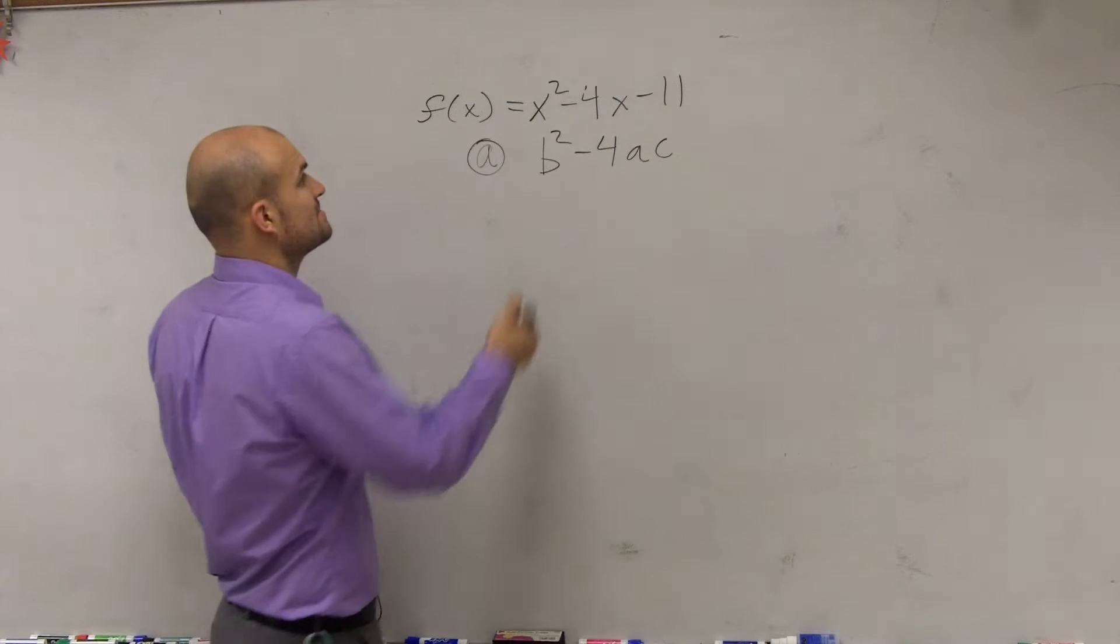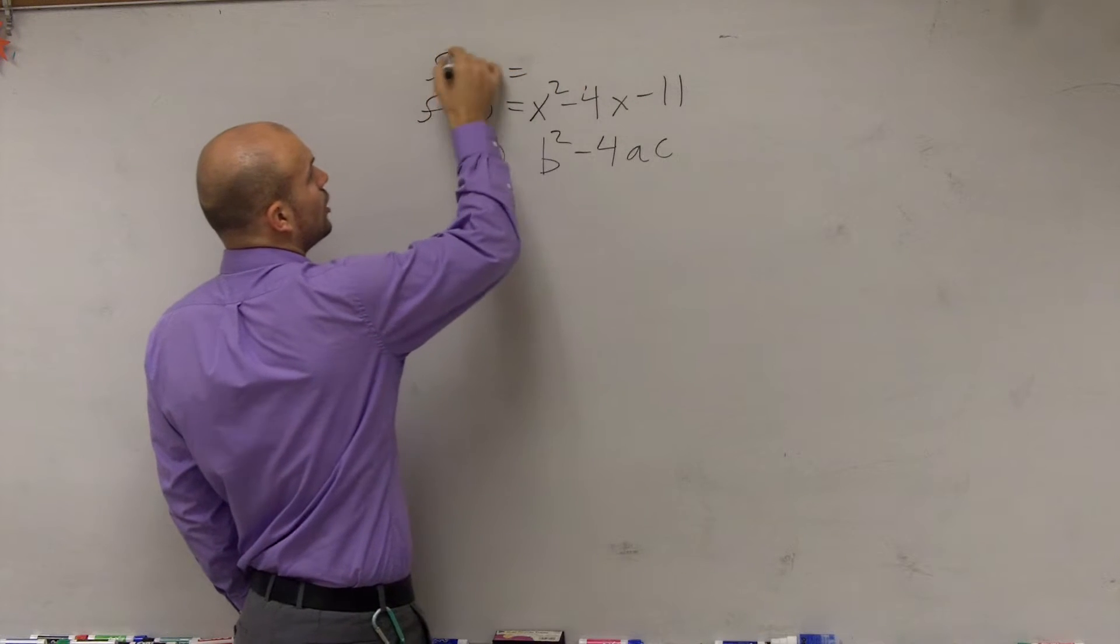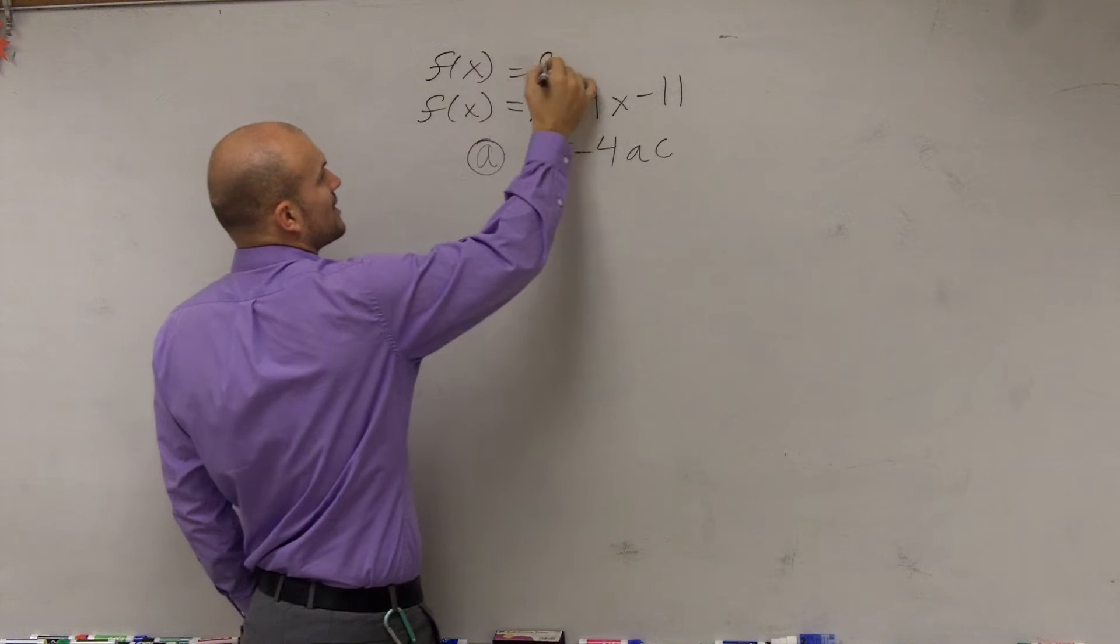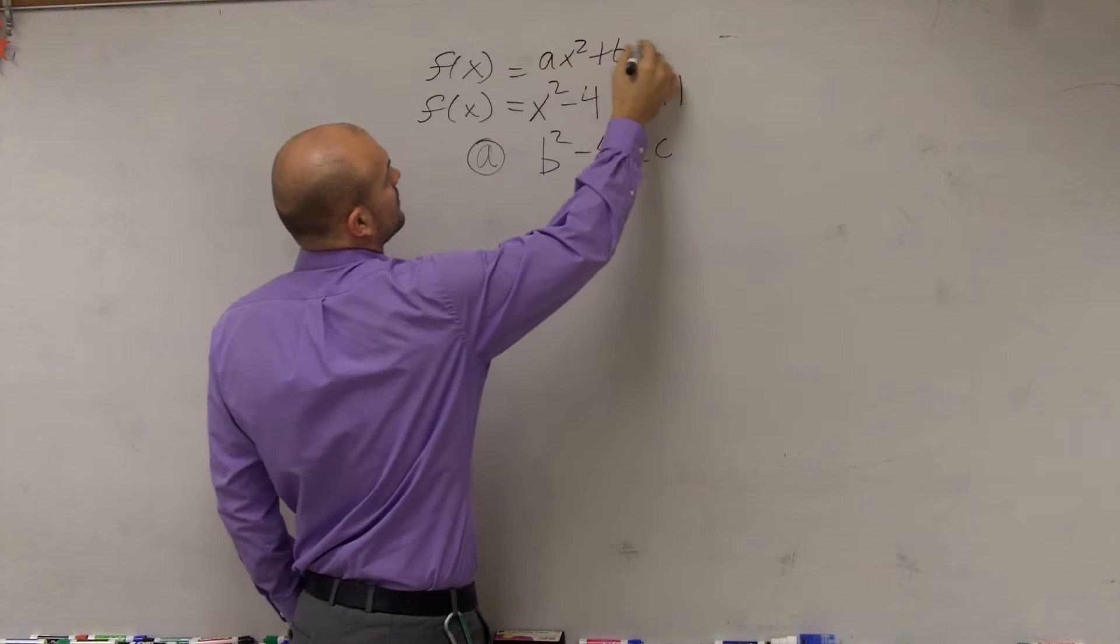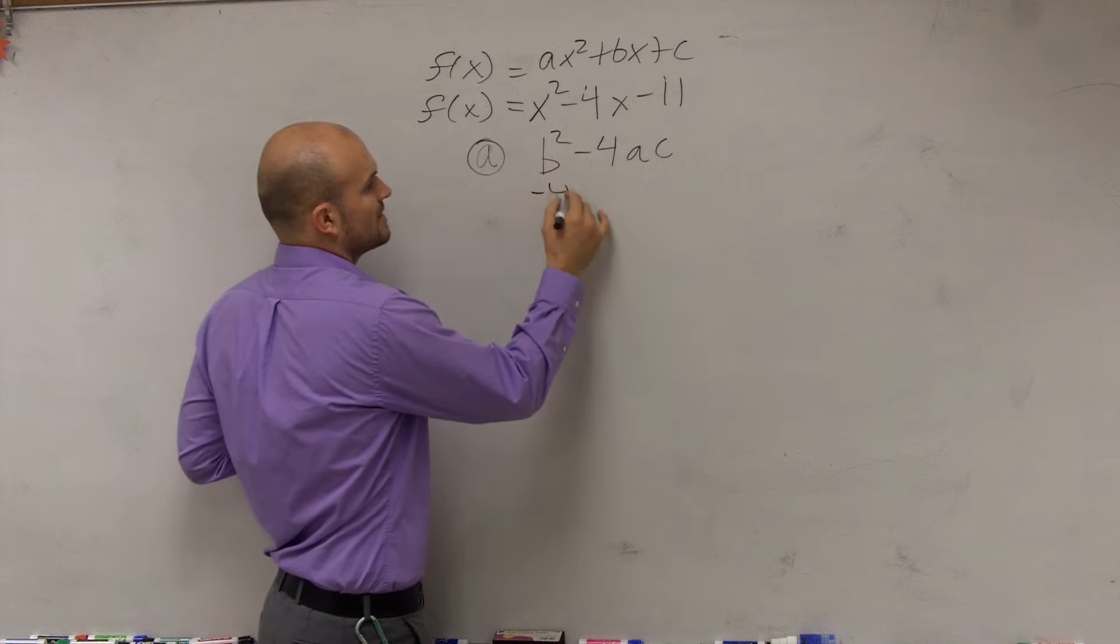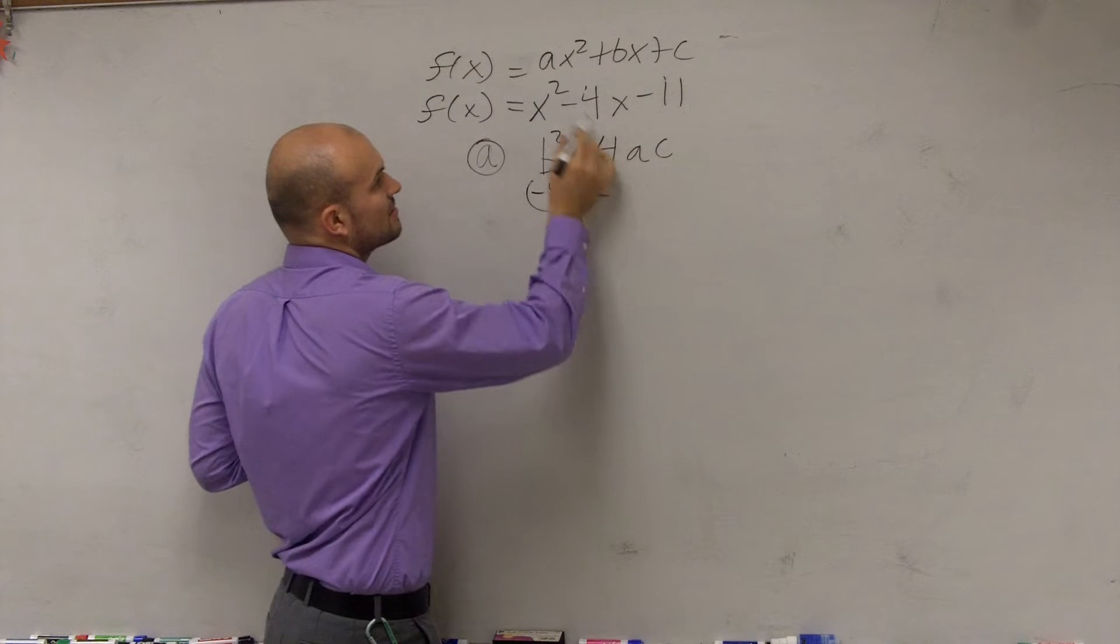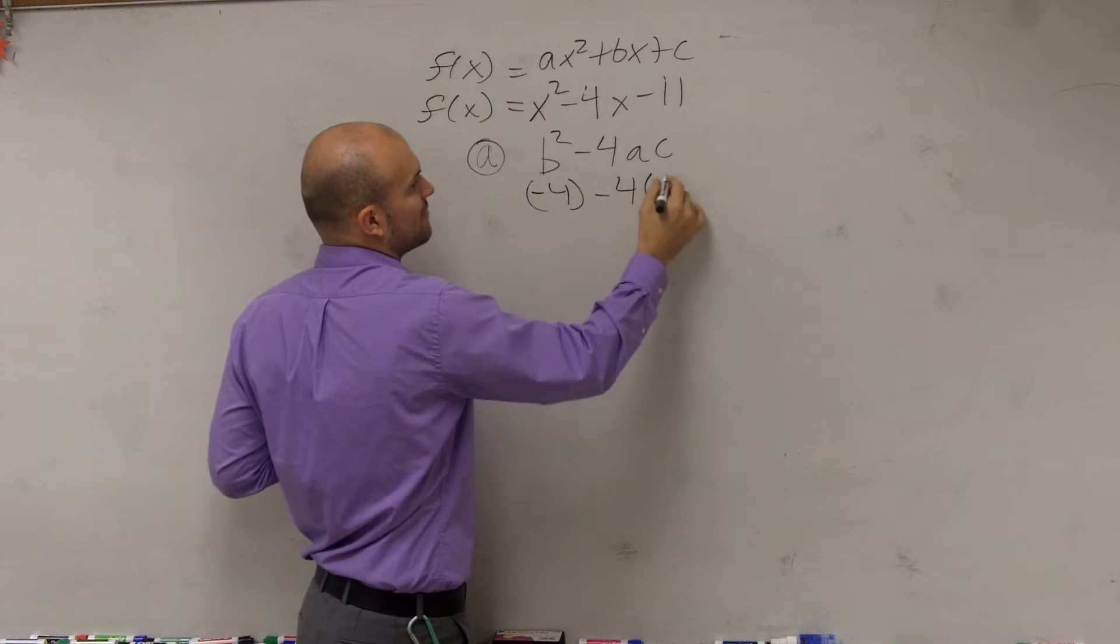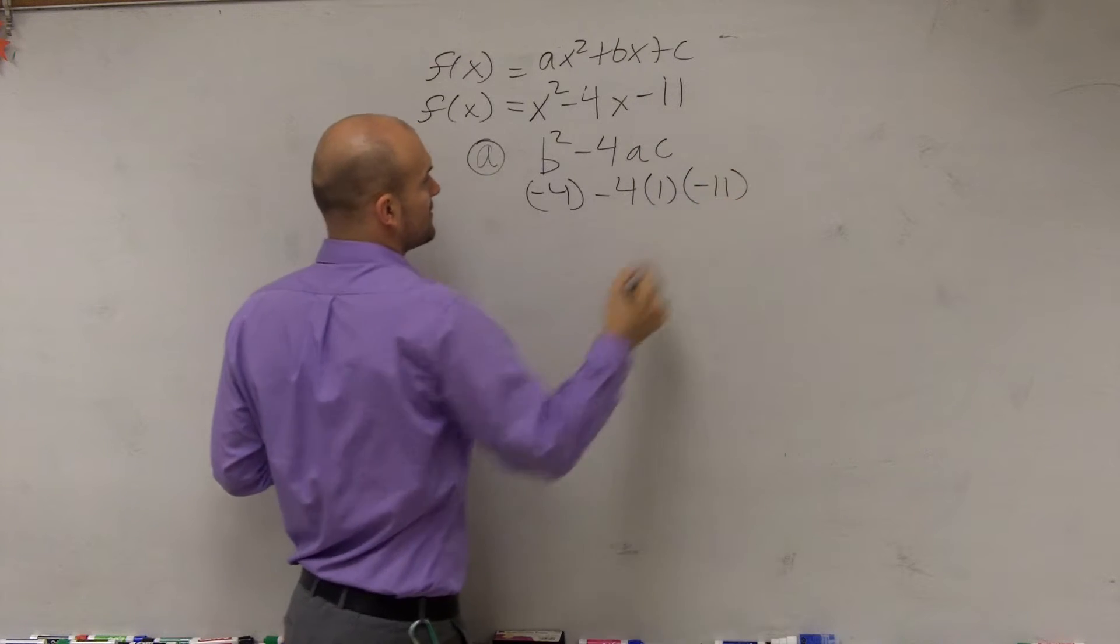So how do you know what B squared A times C is? Remember, all quadratics can be written as a quadratic equation where A, B, and C are real numbers. So in this case, my B is negative 4 minus 4 times A, which is 1, and C, which is negative 11.